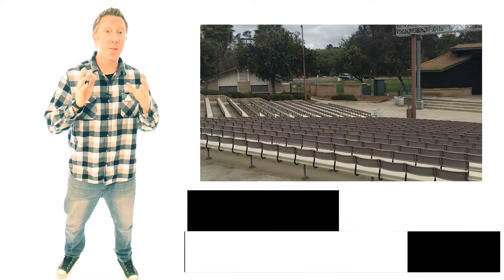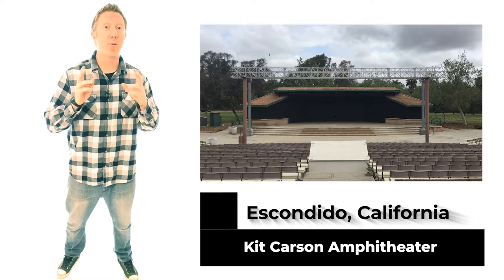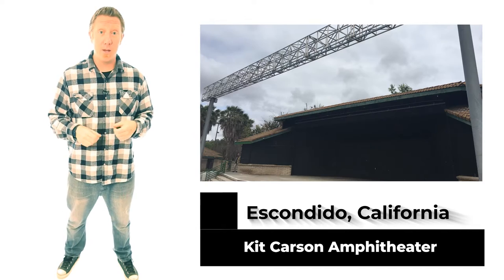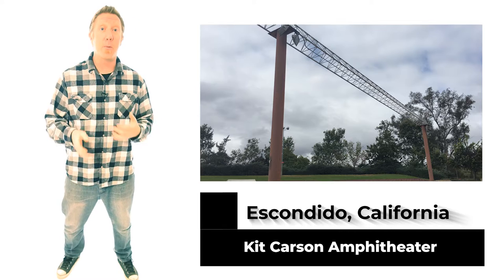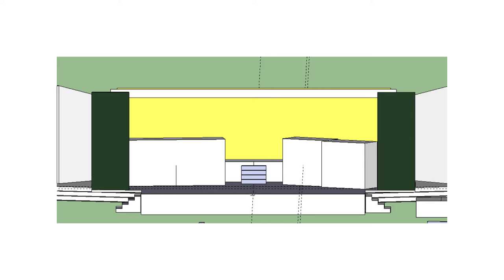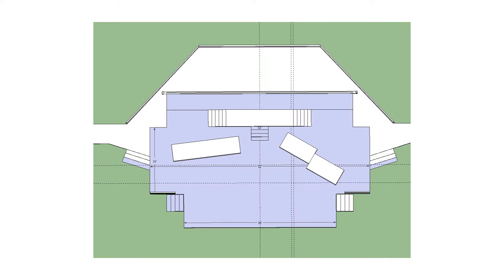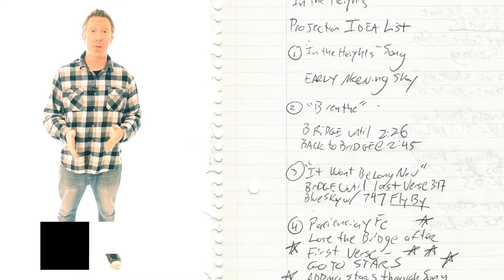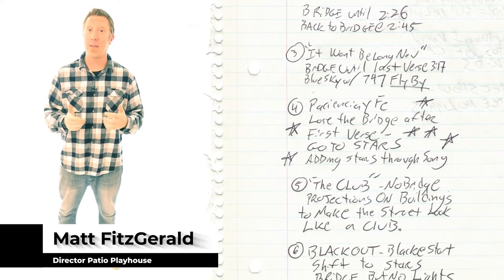The venue has a 3,000-person capacity and a giant stage for them to create the Barrio set. It was my main objective to create the Washington Bridge that appears in the background between the buildings. Now that I had the stage plans, I was able to do the math for my projector placement and cable runs from control to those projectors. When my preliminary research was done, I sat down with the director and went over his ideas and how I could help him bring them to life.